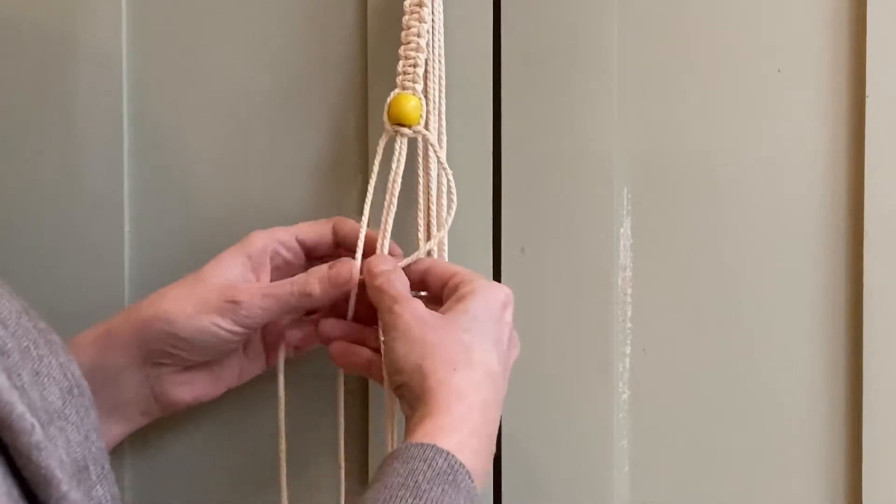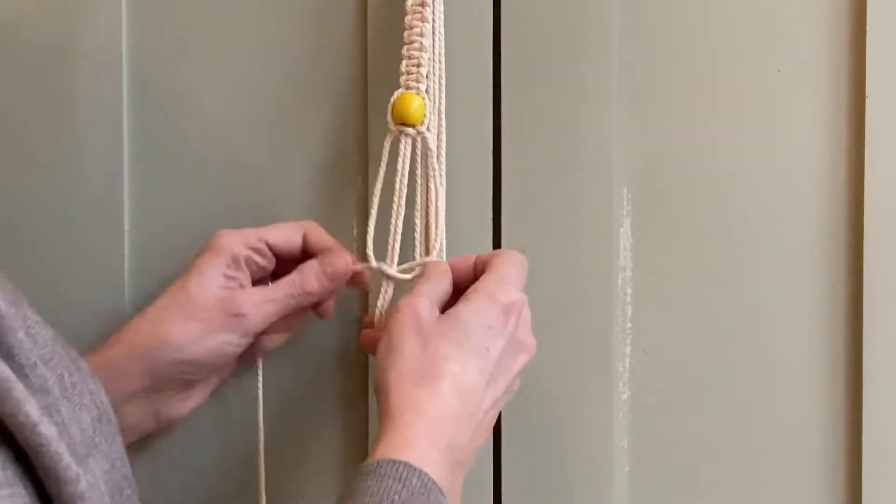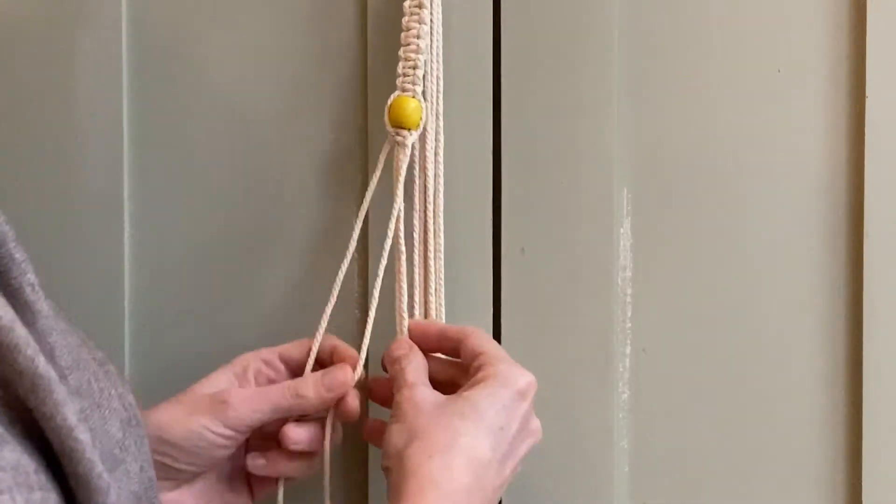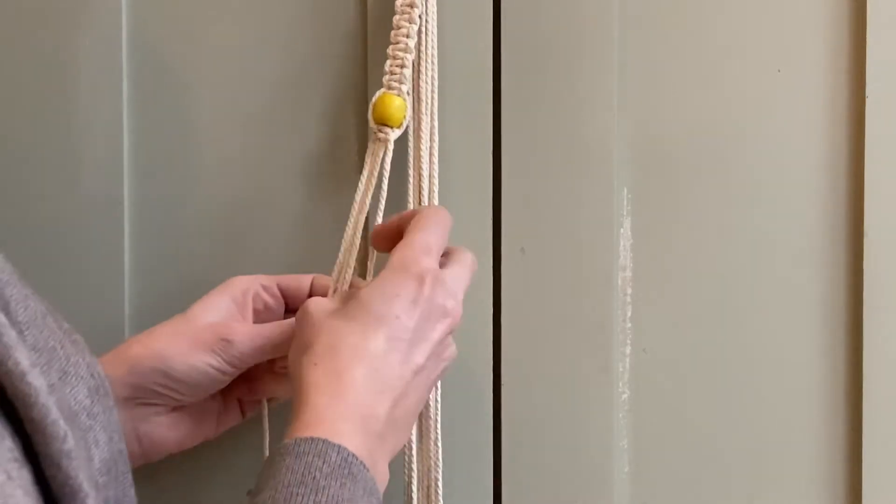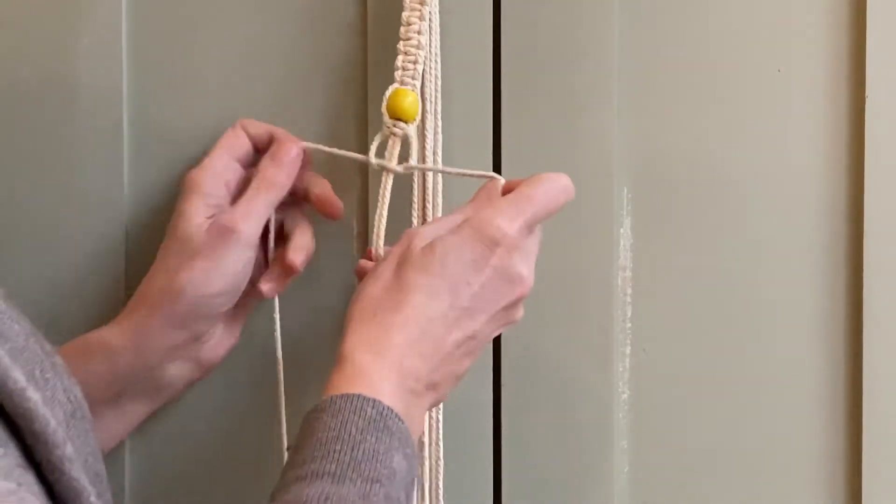And this is potentially the easiest knot to do because you don't have to keep count and really think about where you are. So you just keep doing the same knot ad infinitum over and over and it gives a really nice spiral effect.